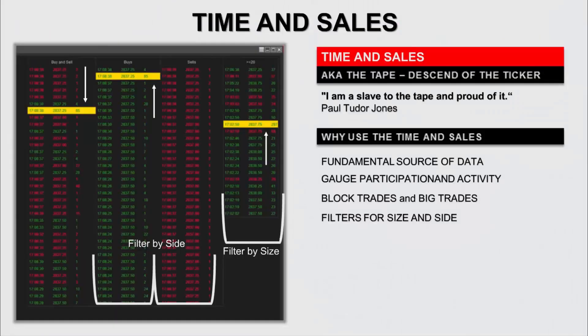The time and sales is one of the earliest forms to analyze the market and the order flow. It's very simple, yet very informative. Ultimately, the time and sales is a way that the exchange, the market, fulfills its duty in disseminating information. And although it's simple, it's the origin of all our charts and analysis. The time and sales is a fundamental source of data.